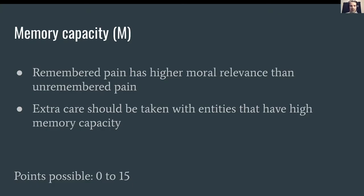For Memory Capacity: John Locke argued that the essential thing for personal identity is a capacity for memories connecting one to one's past self. For humans, most of the happiness and suffering we experience is in relation to things that happened in the past. If I don't remember something painful that happened years ago, it's less relevant than something I remember every day that sticks with me. Extra care should be taken with entities that have high memory capacity, and there is a possible score of 15 points maximum for this category.